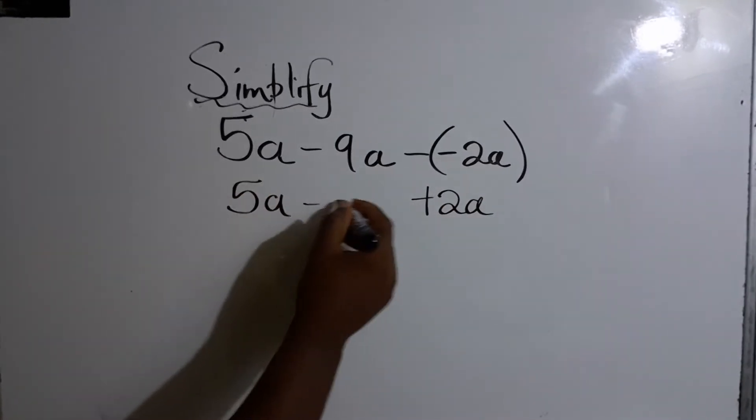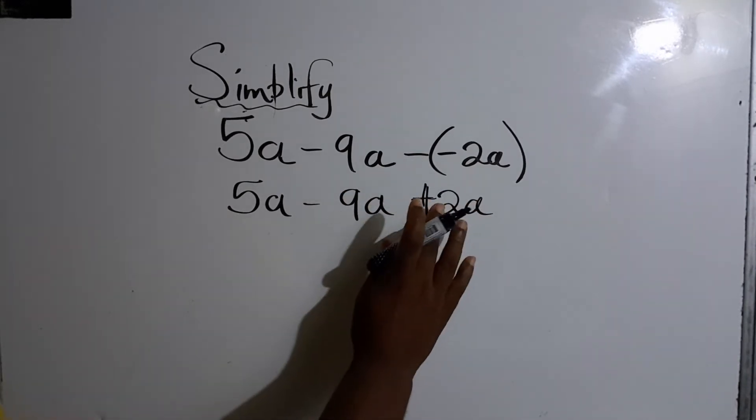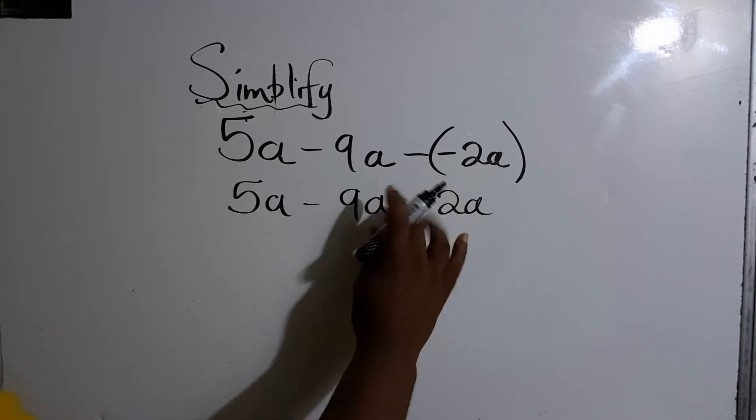Write about this, 5A minus 9A. So all of them are like terms, meaning all of them are A's.